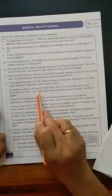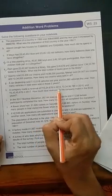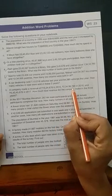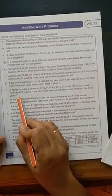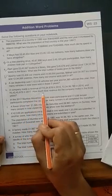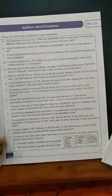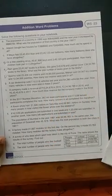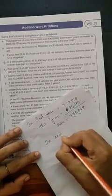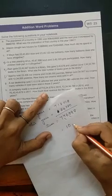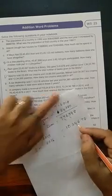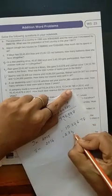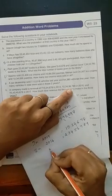Question number H. A company made a revenue of 10,34,678 in 2015, 2 crore 34,56,789 in 2016, and 5 crore 43,45,678 in 2017. How much total revenue did the company make in these 3 years? We want to find out the total of these 3 numbers. In 2015, 10,34,678. In 2016, 2 crore 34,56,789. In 2017, 5 crore 43,45,678.